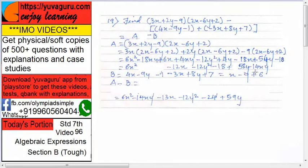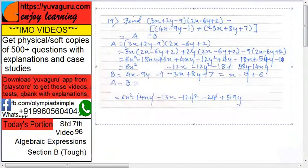This minus will become plus, so 58 plus 1, that is 59y. That is the answer. Try it yourself - practice is the only solution for cracking an exam.